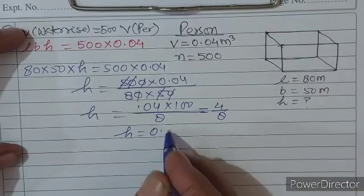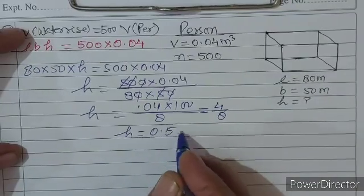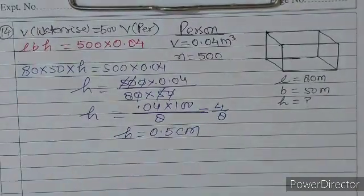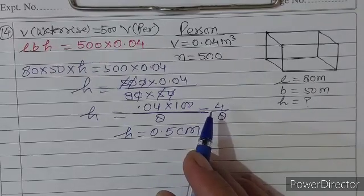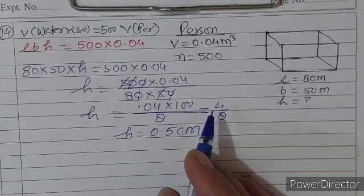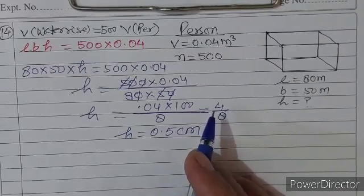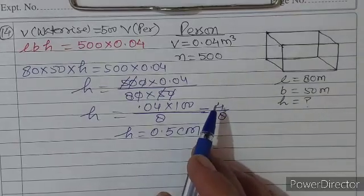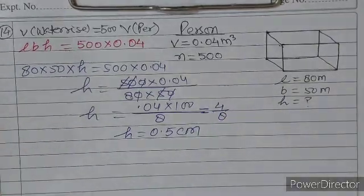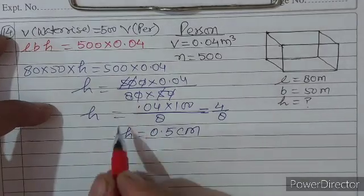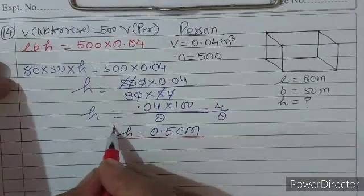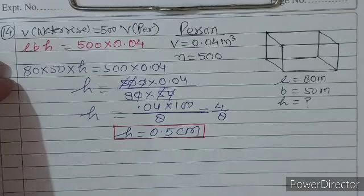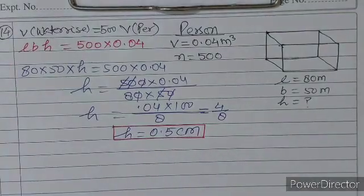H = 0.5 cm। Water level 0.5 cm increase होगा। यही था question number 14 — clear हो गया होगा।